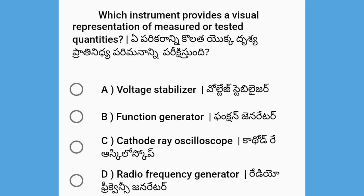Next, which instrument provides a visual representation of measured or tested quantities? The options are voltage stabilizer, function generator, cathode ray oscilloscope (CRO), and radio frequency generator.